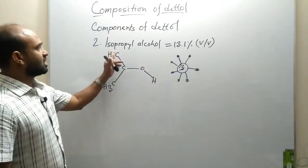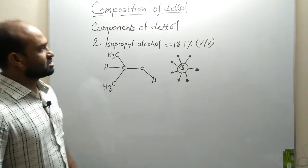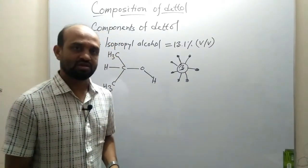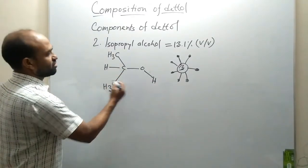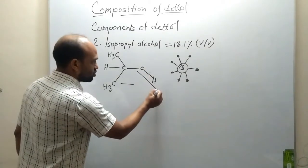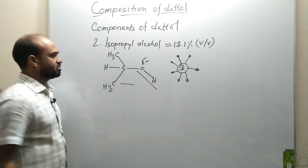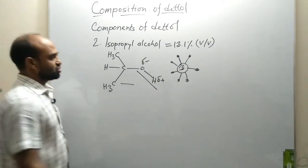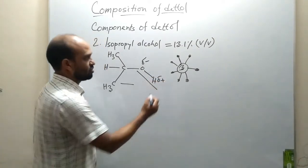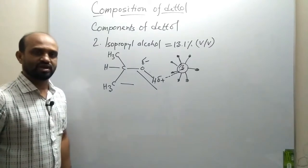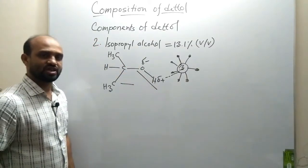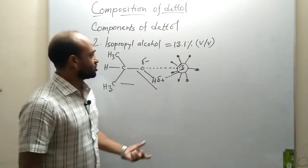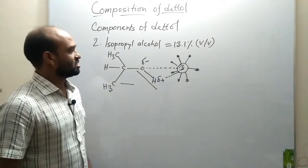Dear students, the second component of Dettol is isopropyl alcohol, and it is taken at 13.1% v/v, that means 13.1 milliliters in 100 milliliters of Dettol solution. The isopropyl alcohol has an OH group present, where it becomes partially negatively charged, and the other end becomes partially positively charged. This compound acts as a germ killer. The positive end of this compound forms bonds with the negative end of the protein molecule, and the negative end of the isopropyl alcohol forms bonds with the positive end of the protein molecule. This way, isopropyl alcohol also destroys the virus and bacteria.